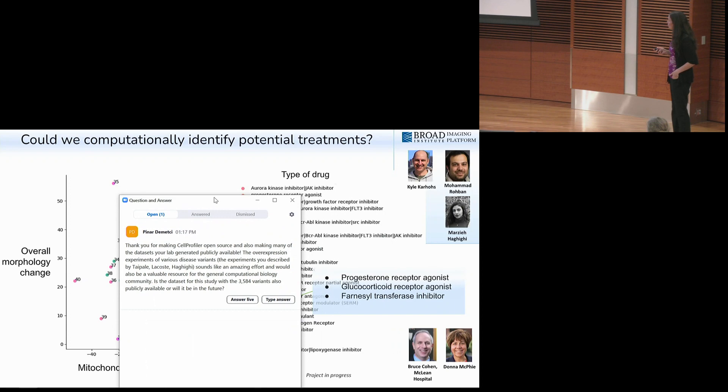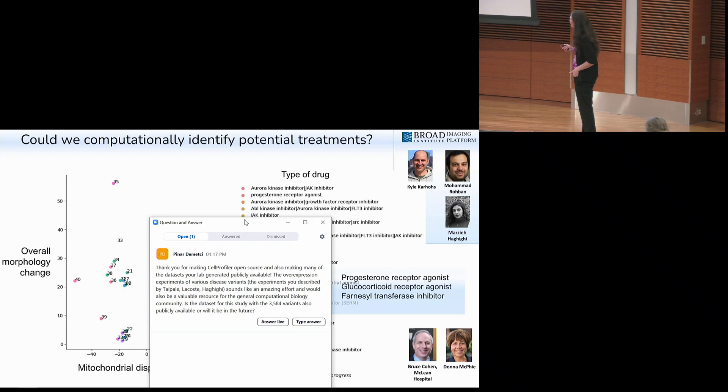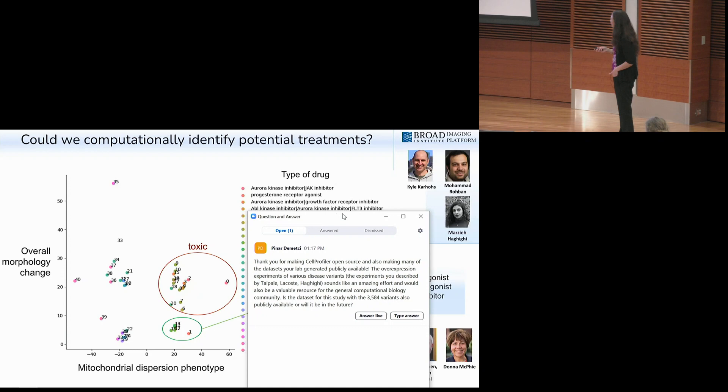We could physically do a drug screen, take the fibroblasts in the unhealthy condensed state and try to make them be in the more dispersed state by adding a compound. But we don't have infinite resources, so we thought we would take a computational approach. Since it's just this one phenotype, mitochondrial dispersion, we asked, do we have any data sets where we collected images where the mitochondria were stained using MitoTracker?